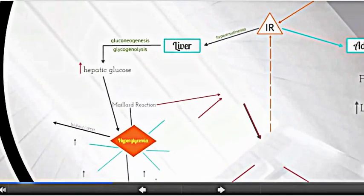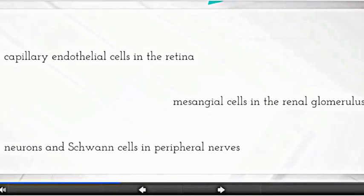Hyperglycemia bathes every cell type throughout the body. Consequently, what we see in type 2 diabetes is that cells that are unable to decrease the rate of glucose transported inside the cell become damaged.